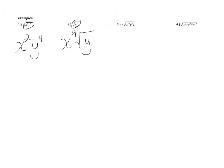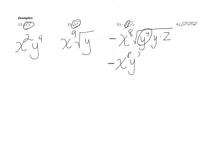For number three, I notice x to the sixteenth is my perfect square, so I pull out x to the eighth — half of 16 is 8. There's a negative sign in front, so the whole answer is negative. Inside I have y to the fifth, so I break that into y to the fourth times y times z. Y to the fourth is a perfect square — its square root is y squared. So I pull that out, giving me negative x to the eighth, y squared, square root of yz.